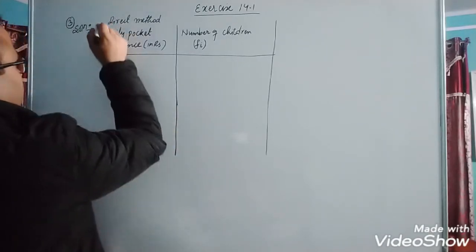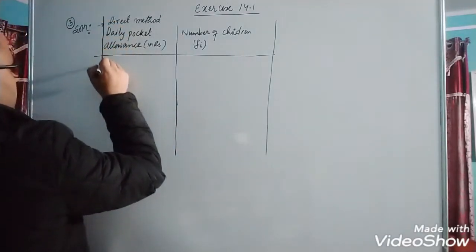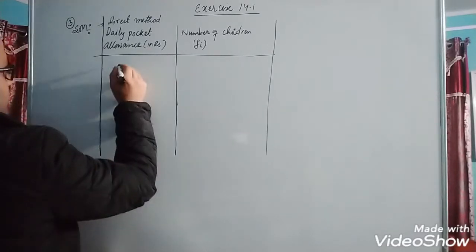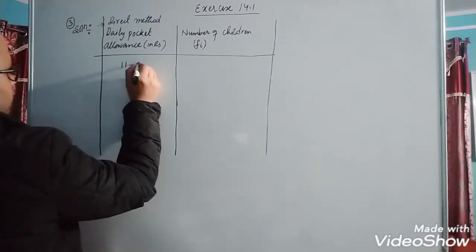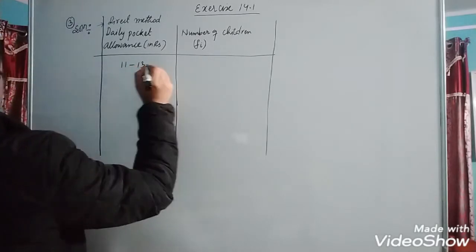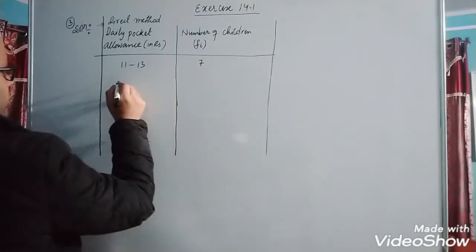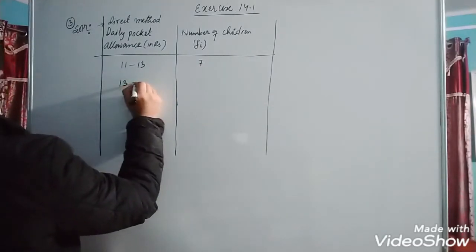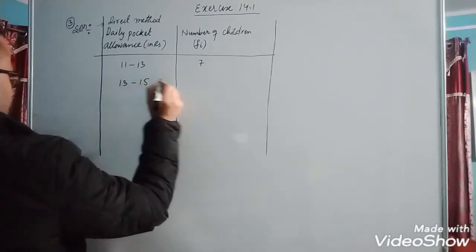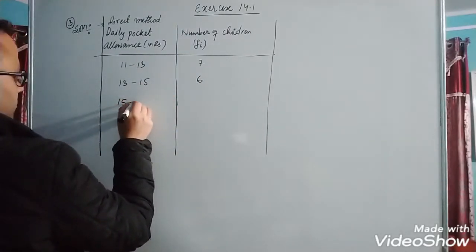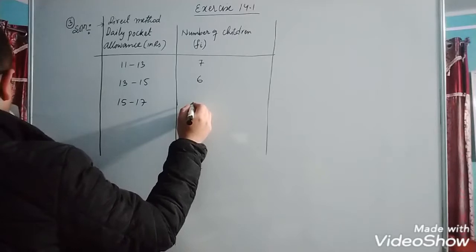We need to calculate the missing frequency. Mean is given. For 11 to 13 rupees pocket allowance, number of children is 7. For 13 to 15, number of children is 6. For 15 to 17, number of children is 9. For 17 to 19, number of children is 13.